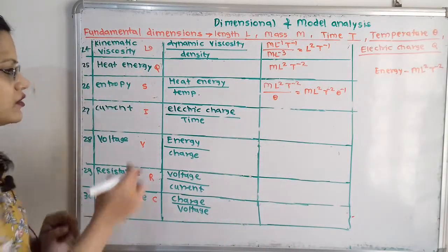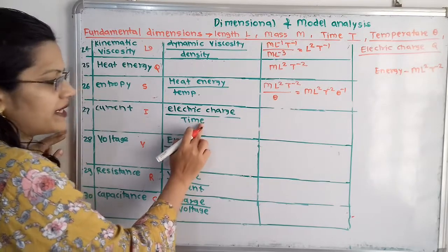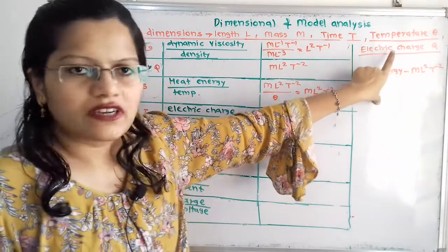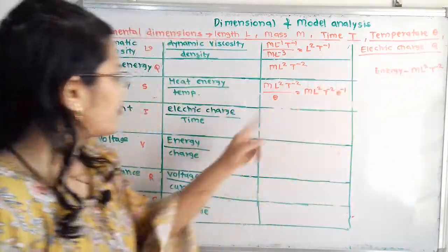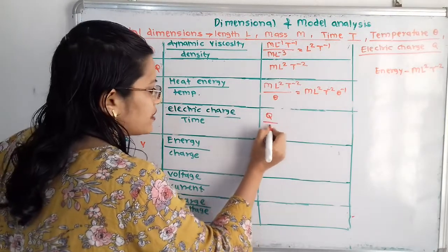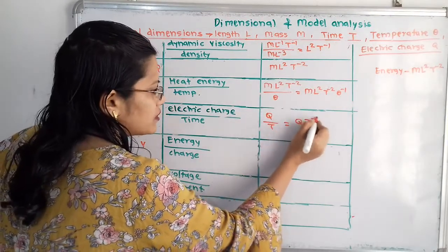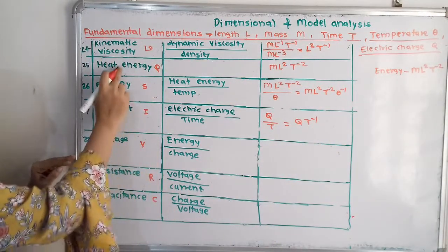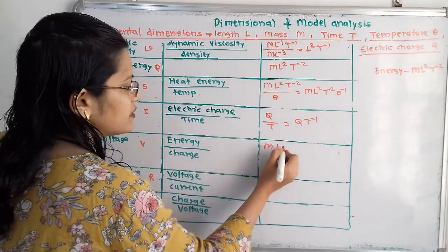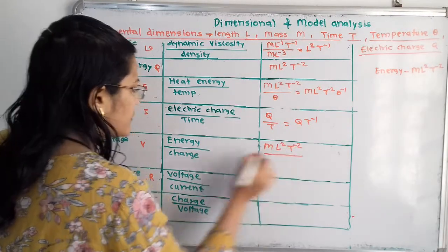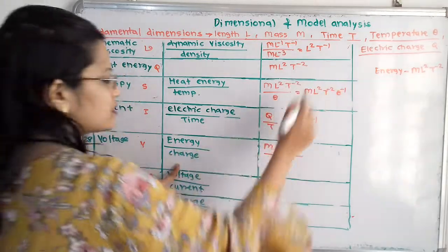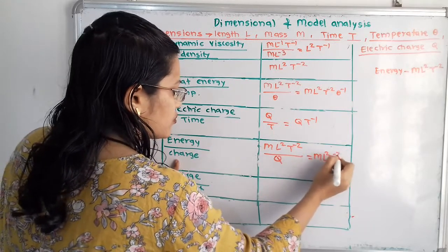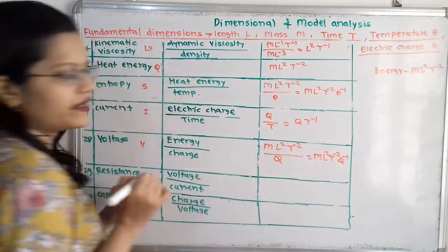Then current. Current is electric charge by time. Electric charge Q is a fundamental physical quantity, so the dimension is Q divided by T, that is QT raised to minus 1. Then voltage. Voltage is energy by charge. Energy is ML squared T raised to minus 2 divided by charge Q, giving ML squared T raised to minus 2 Q raised to minus 1.